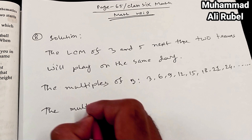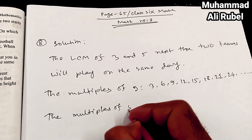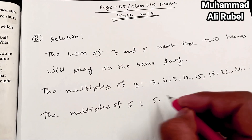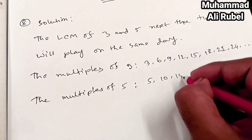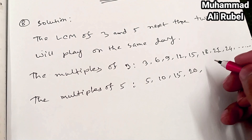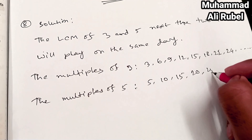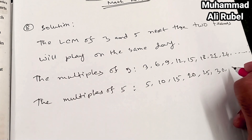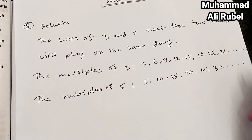The multiples of 5 are: 5, 10, 15, 20, 25, 30... and so on to infinity.